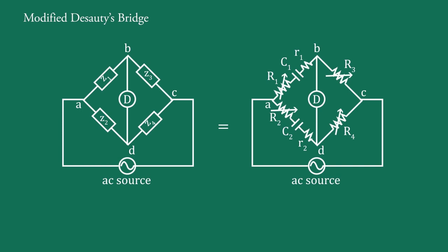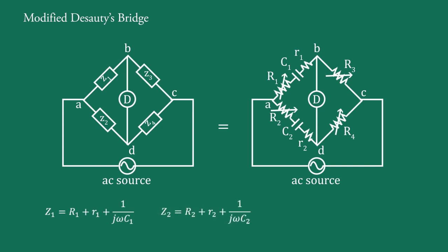Comparing the components of the arms of this modified Dissotis bridge with those of the basic bridge, we have: Z1 equal to R1 plus r1 plus 1 upon jωC1, Z2 equal to R2 plus r2 plus 1 upon jωC2, Z3 equal to R3, and Z4 equal to R4.